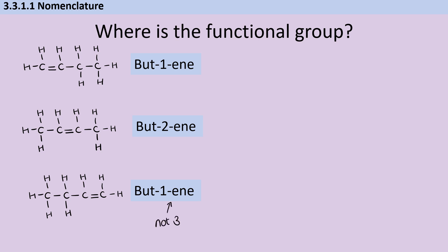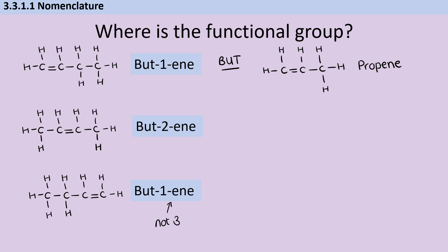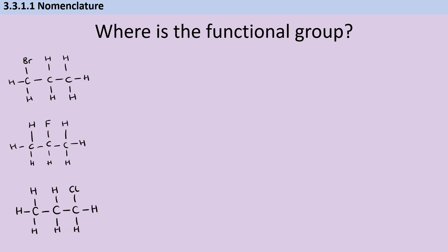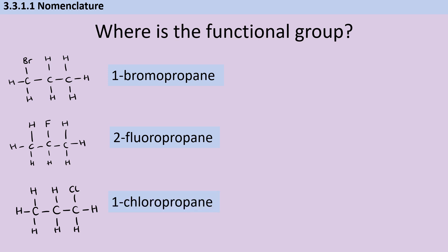The one thing you do need to watch out for is that we're only going to use numbers when we need to. With these butene molecules we do need them, but if I think about propene, there's only one place that double bond can be. Whether you draw it on the left or on the right, both would be prop-1-ene — so there's actually no point writing a number in, and we just call it propene. Likewise, we have 1-bromopropane, 2-fluoropropane, and 1-chloropropane — again, it doesn't matter whether we count from left or right, we're just going for the smallest possible number.